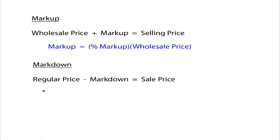For markdown, we have the regular price. We want to subtract the markdown, and that gives us the sale price, when things go on sale. To calculate that markdown, we have the percent of the markdown times that regular price. That gives you the actual markdown of the item. Those are the concepts. I want to do a couple of examples, and that's it.